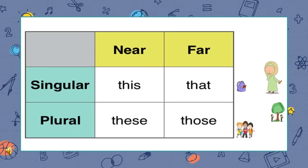Let's recap whatever we learned so far. For a singular object or person, we are going to use 'this' only for the nearest one, and 'that' for the far one. For example, this is my pencil, which I am holding right now. And that is my bag, which is really far from my place. What if it's plural? For plural — meaning more than one — if it's a plural object or people near to us, we use 'these'. And if the things or people are far from us, we use 'those'. For example, these are my friends. Those men are standing right next to the tree.